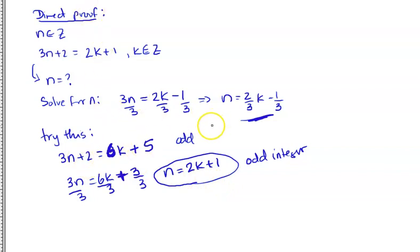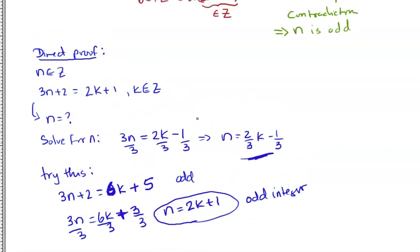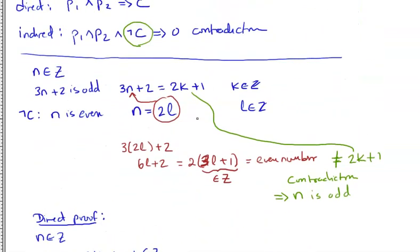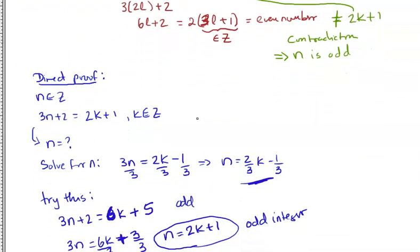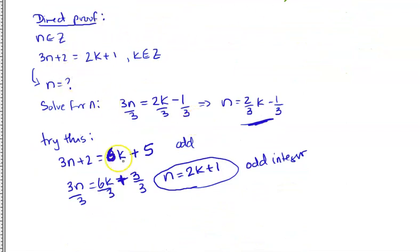So why not just do a direct proof? The indirect proof was a lot cleaner — it fell together more naturally than trying to guess and check what form to give the odd number to work out nicely. Indirect proofs are sometimes just cleaner, though often you can do either. It often comes down to preference.